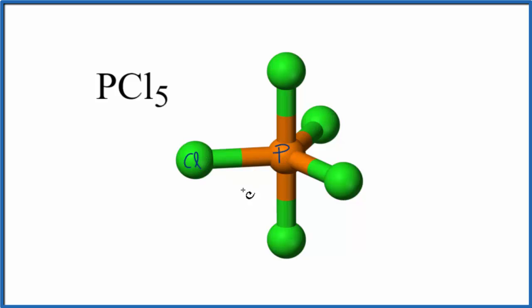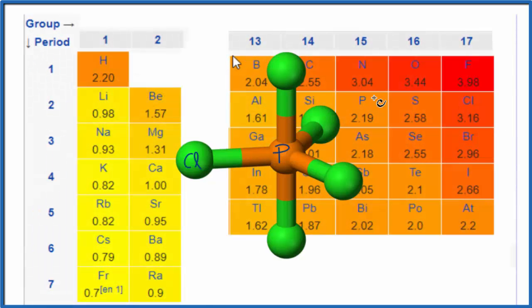We want to look at the phosphorus-chlorine bond to see if the bond itself is polar or nonpolar. To do that we can look at the electronegativity. Here is phosphorus 2.19, chlorine 3.16. Since the difference here is greater than 0.5 but less than 2.0, this is considered to be a polar bond.